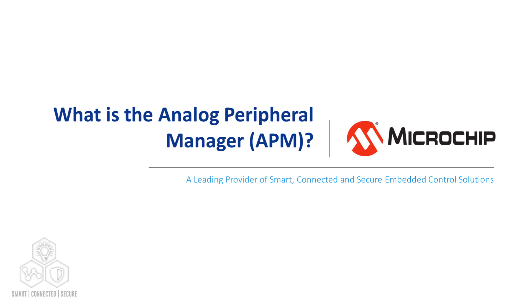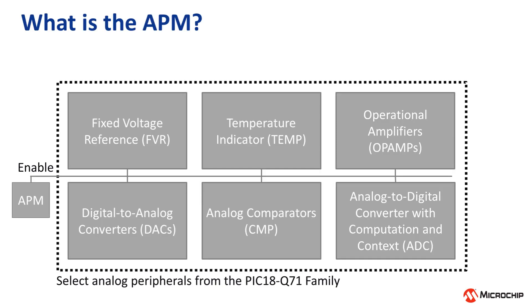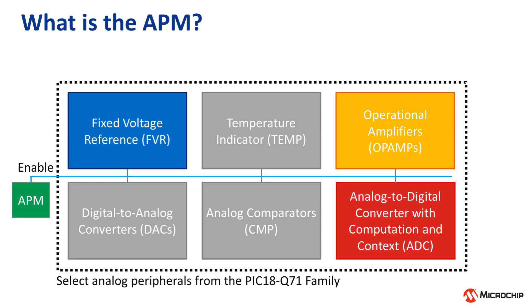More information about this peripheral and the device family are included in the links below. The objective of the APM peripheral is to save power by automating the turn-on and turn-off of analog peripherals independently of the CPU.